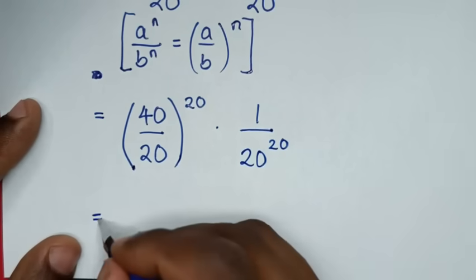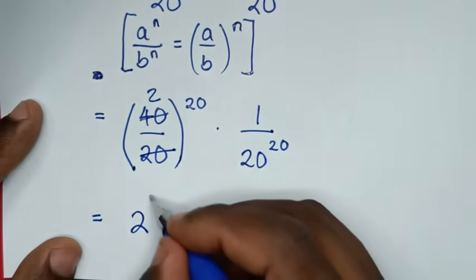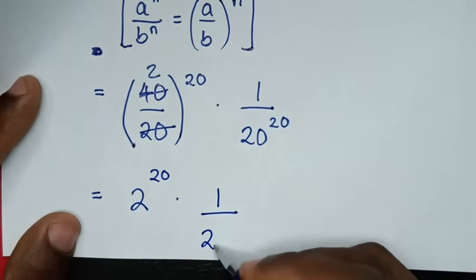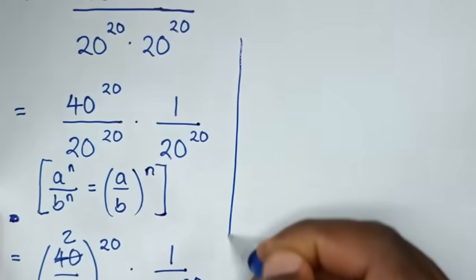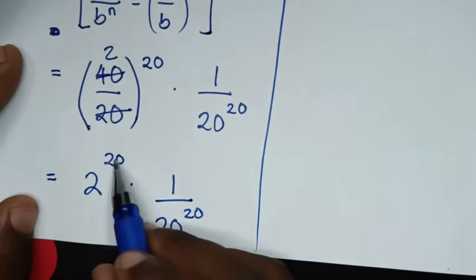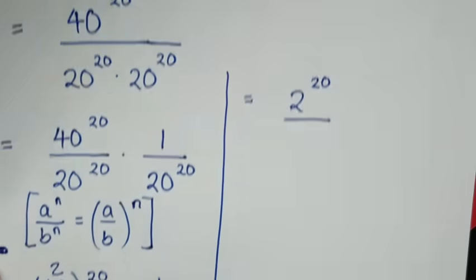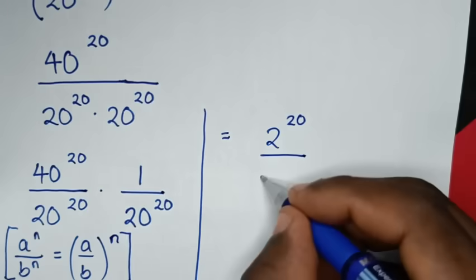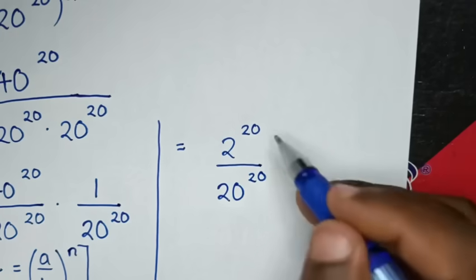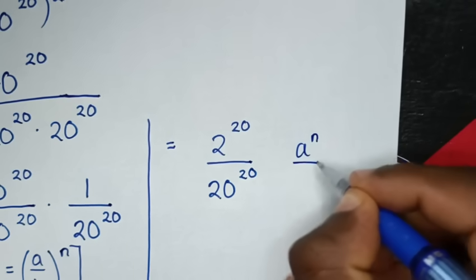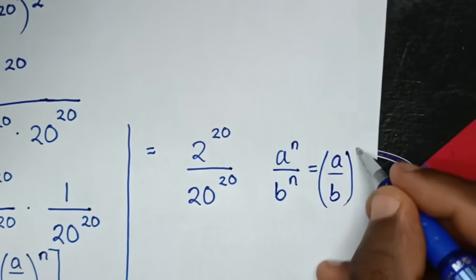Now, to simplify: 40 divided by 20 is 2, so it will be 2 power of 20, then times 1 over 20 power of 20. Then, in the next step, it will be equal to: 2 power of 20 times 1 is 2 power of 20, over 20 power of 20. So, 2 power of 20 over 20 power of 20. This part here is in the form of a power of n over b power of n, which is equal to a over b bracket power of n.